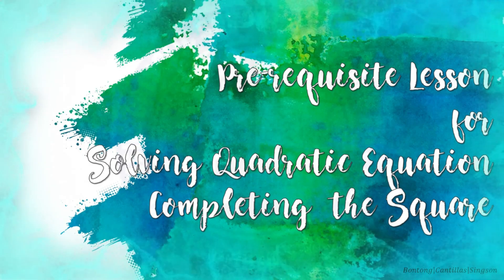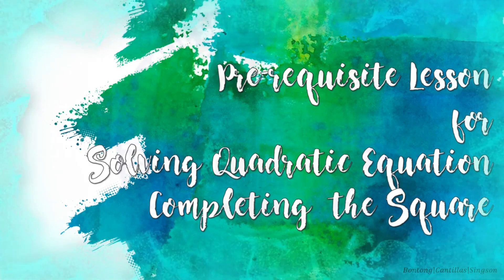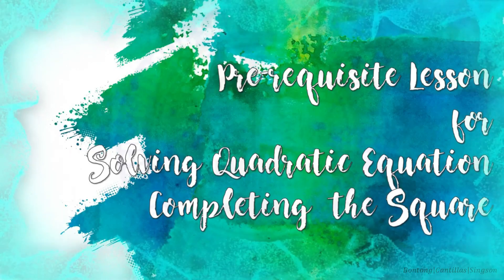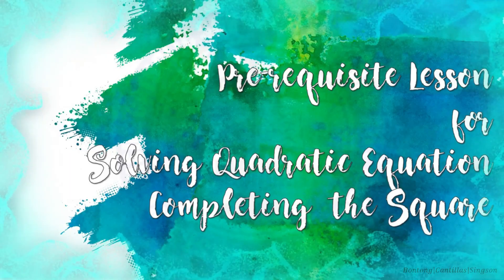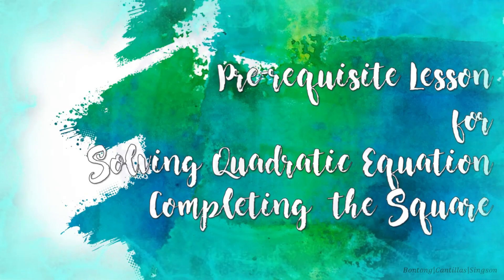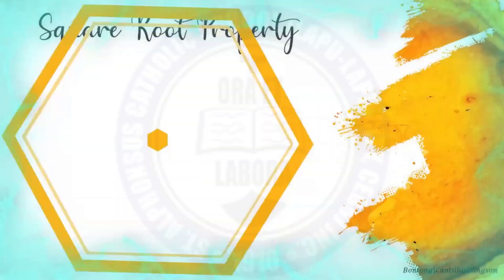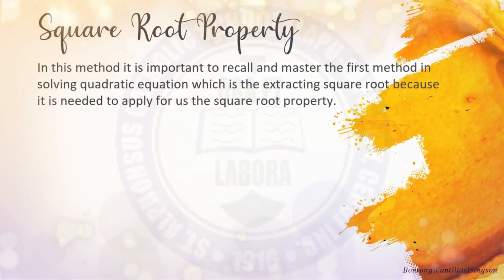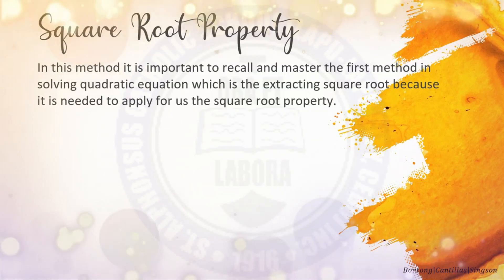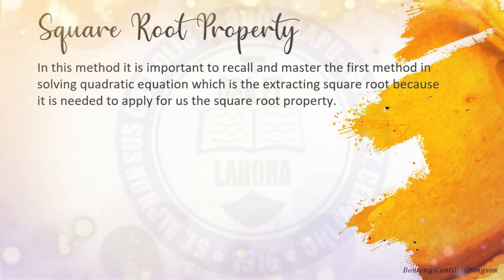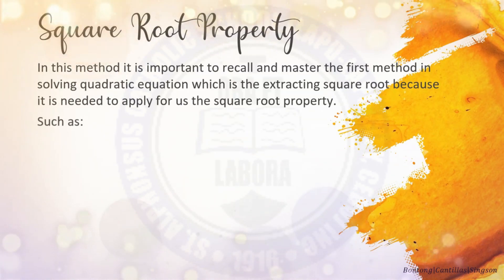The next method in solving quadratic equations that we will be dealing with is completing the square. In this method, it is important to produce a perfect square trinomial so that the square root property can be applied. It is also important to recall the first method in solving quadratic equations, which is the extracting of square roots, because it is needed to apply the square root property.